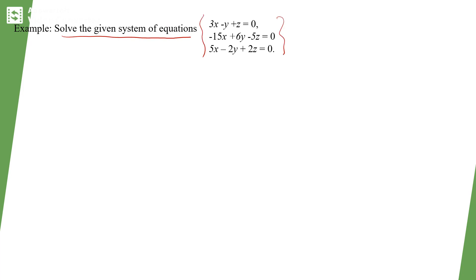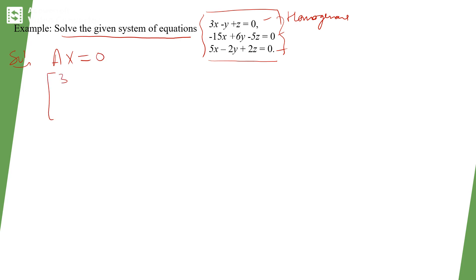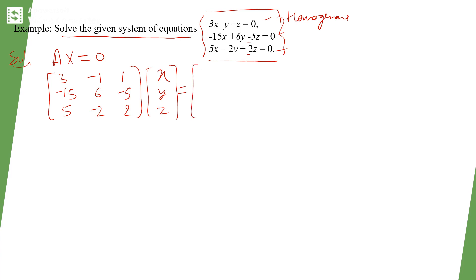Let's take an example: solve the given system of equations. This system is homogeneous because the right-hand side is 0. We write it in the form Ax = 0. The coefficient matrix is [3, -1, 5; -1, 6, -2; 1, -5, 2] and the unknowns are x, y, z.